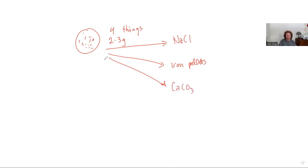A couple of things that are worth noting about this experiment is you're working with a mixture that consists of four different things. You're going to get about two to three grams of this solid and you're going to separate off sodium chloride, iron pellets, CaCO3 (calcium carbonate), and sand. Those are the four things that you're trying to isolate.